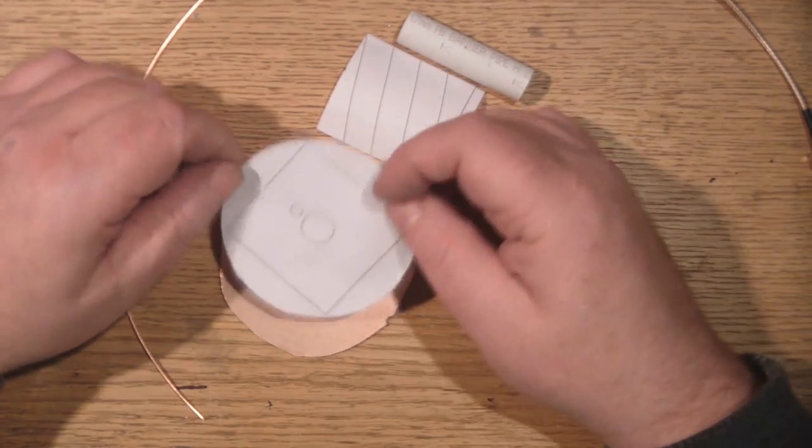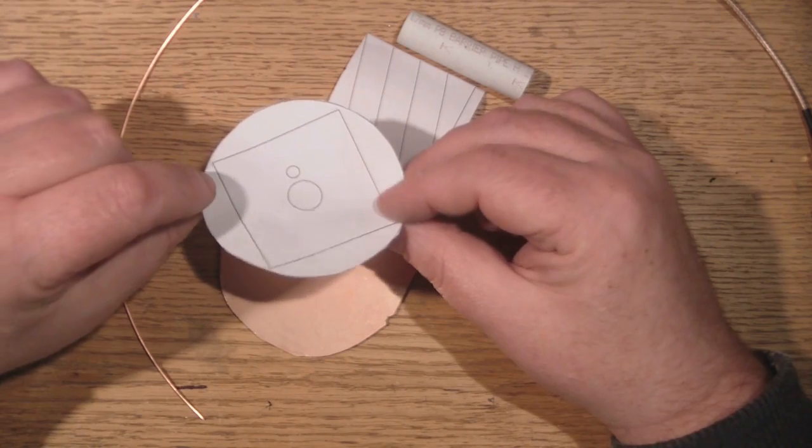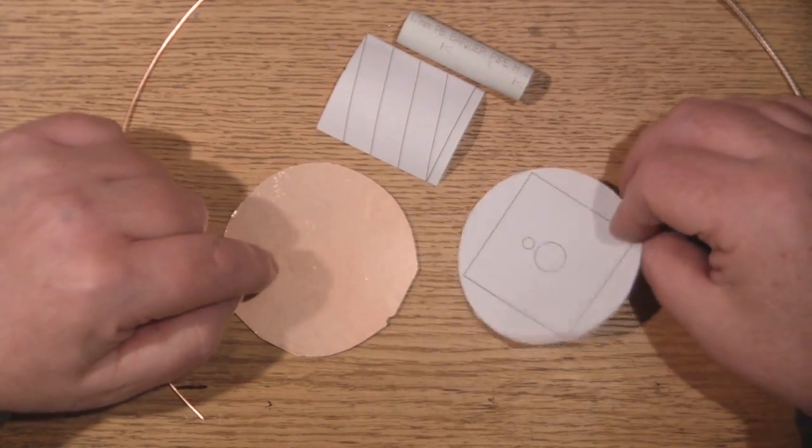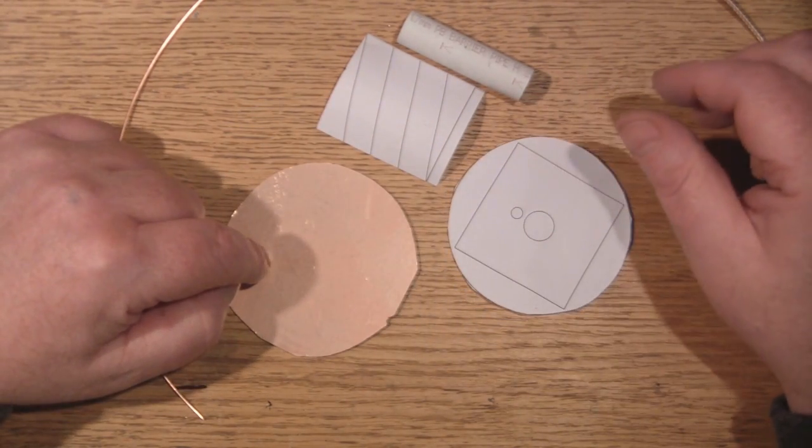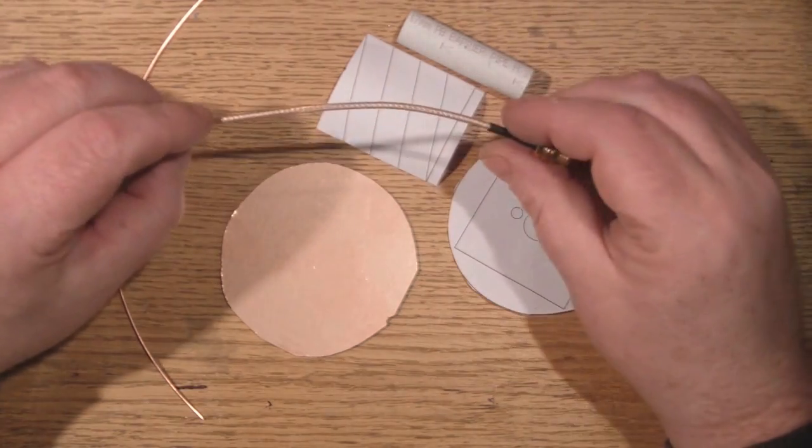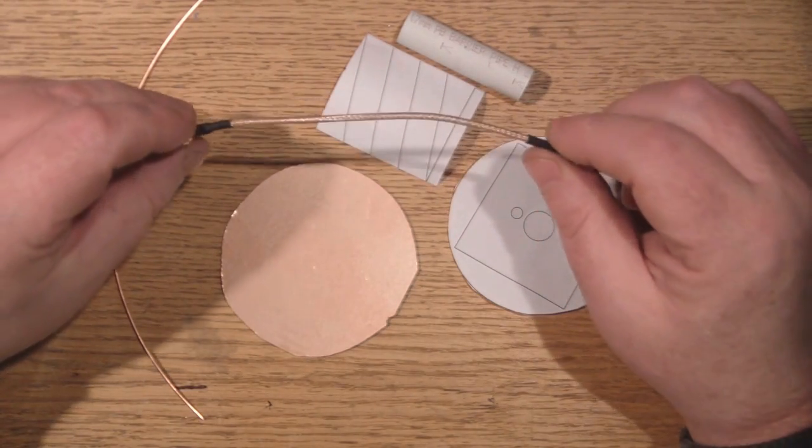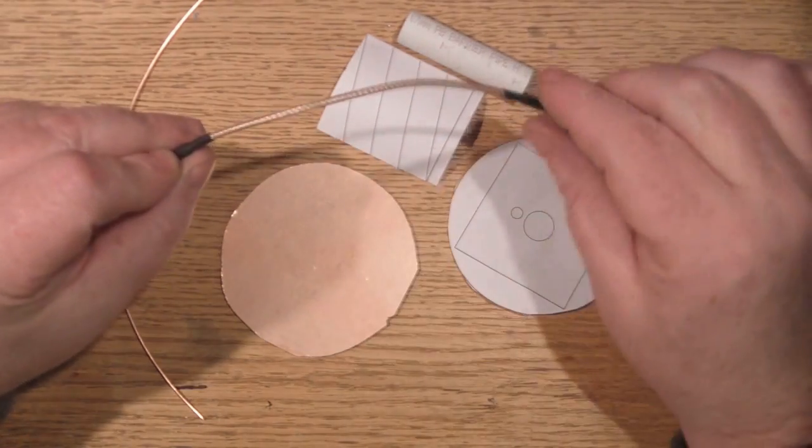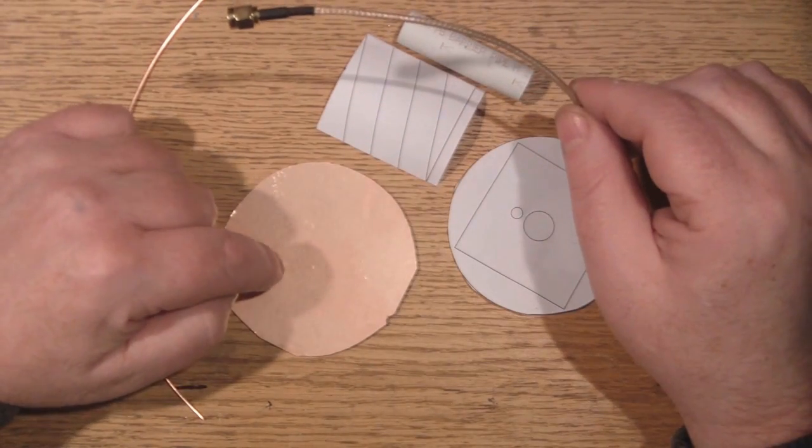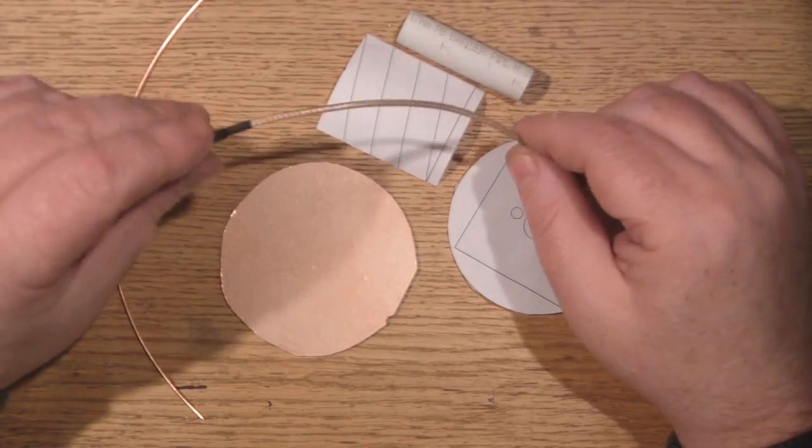I've got the back reflector cut out here and this time I'm going to be using copper clad board because I'm going to be connecting this one up using this pigtail. I'm going to be cutting it off and I'm going to need to be able to solder to this so I can't use aluminum this time.